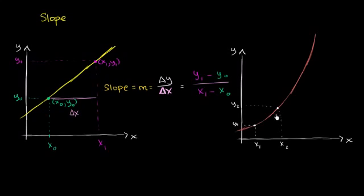We don't have the tools yet — and this is what's exciting about calculus. We will soon have the tools to figure out the rate of change of y with respect to x at exactly one point. But using just the tools from algebra, we can at least start to think about the average rate of change over the interval from x₁ to x₂. That average rate of change is change in y over change in x: y₂ minus y₁ over x₂ minus x₁.